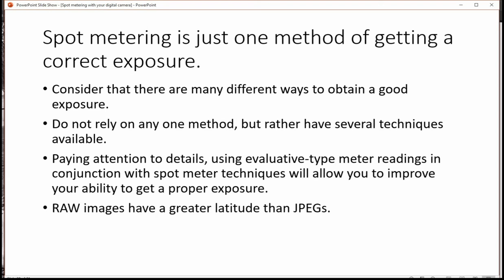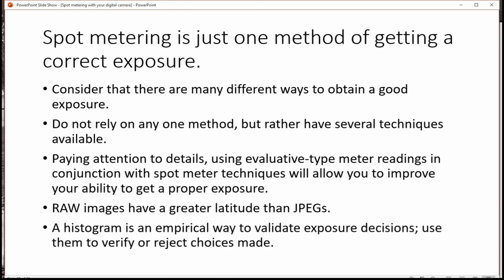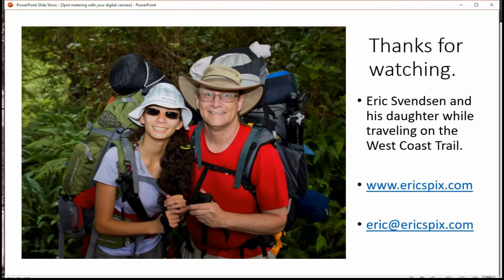Raw images have better latitudes than JPEGs so consider shooting in raw, and a histogram is an empirical way, basically that means it's a scientific way, to validate exposure decisions. Use them. Use histograms to verify or reject choices that you made. Thanks so much for watching this. My name is Eric. Have a good day.